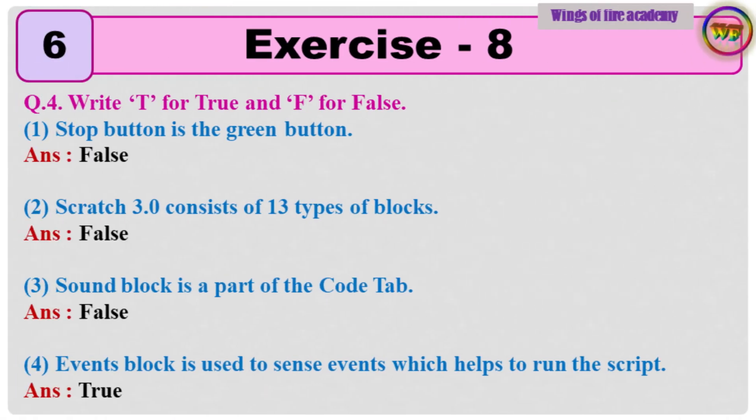Question 4: Write T for true and F for false. 1. Stop button is the green button. Answer: False. 2. Scratch 3.0 consists of 13 types of blocks. Answer: False.